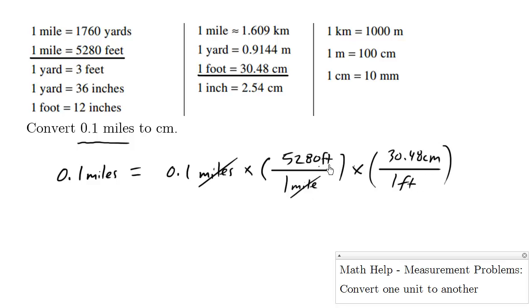However, we can just start canceling diagonally and the units cancel out. And what we can do is find the answer miles to centimeters directly by multiplying 0.1 times 5280 times 30.48, which is approximately equals to 16093 centimeters.